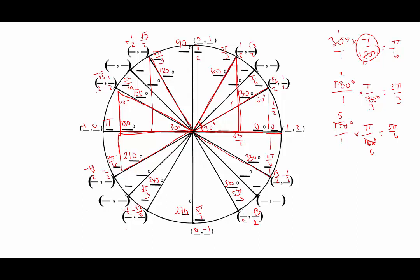So that was counting by 30s around the unit circle. For the radians, we were actually increasing by pi/6 each time — 1·pi/6, 2·pi/6, 3·pi/6, 4·pi/6 — and every other one simplifies. We still have 4 more points to complete before the unit circle is done.